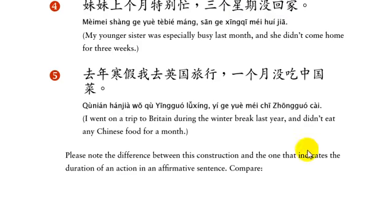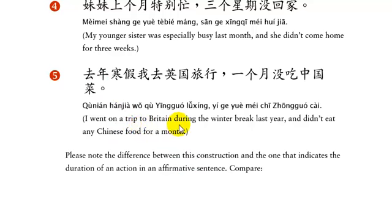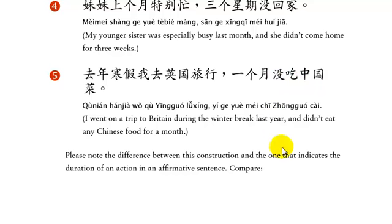And finally: 去年寒假，我去英国旅行，一个月没吃中国菜. Last year during winter break, I went on a trip to Britain and didn't eat any Chinese food for a month. So: 去年寒假 — last year, winter break; 我去英国旅行 — I went to Britain to travel; 一个月 — time element; 没吃中国菜.